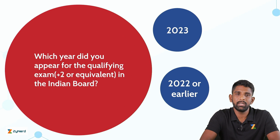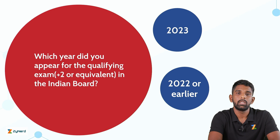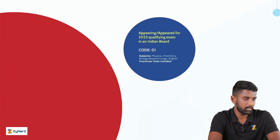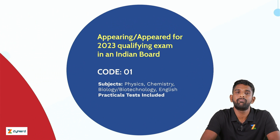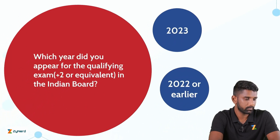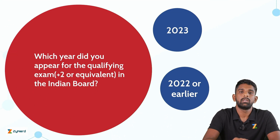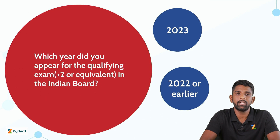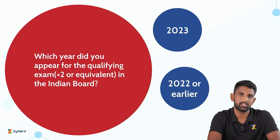Which year did you appear for the qualifying examination of the Indian board? If you are appearing for the qualifying examination in 2023, then you will have to fill Code 1. If you are a candidate who has already completed their qualifying examination in 2022 or earlier, then let's go to the next condition.